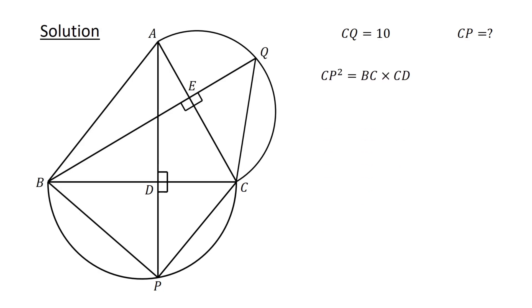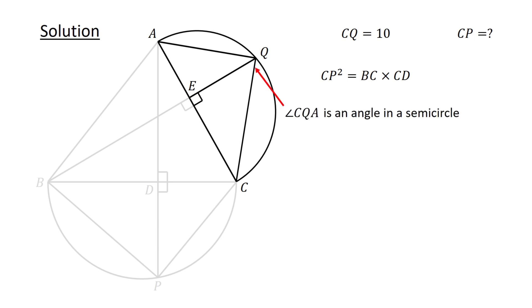Following this, connect A to Q and consider triangle ACQ and the semicircle. Similarly, angle CAQ is an angle in the semicircle. Again, we use the property that an angle in the semicircle is a right angle. To conclude that angle CAQ equals 90 degrees. Next, let angle ACQ be phi.